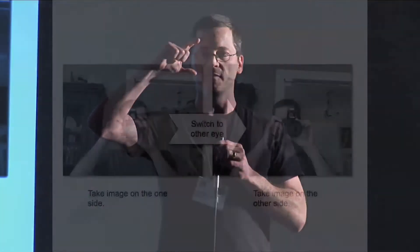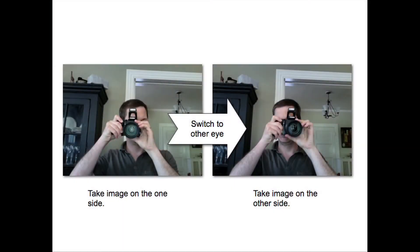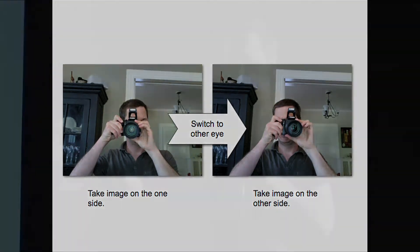Taking the stereoscopic pair is actually pretty simple. With your digital camera, you first take one picture of your subject, then you move your camera slowly over to the other eye and take another picture. That gives you the stereo pair. Then you export it out as a plain PNG file or JPEG.